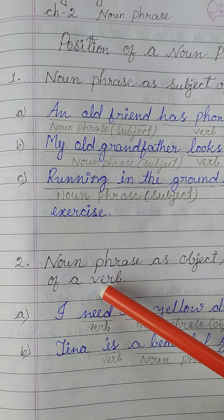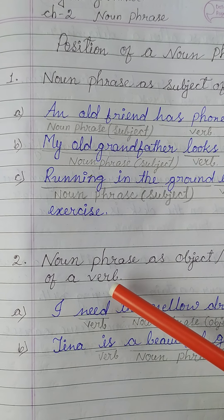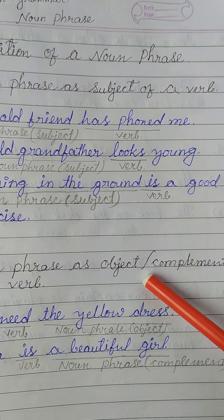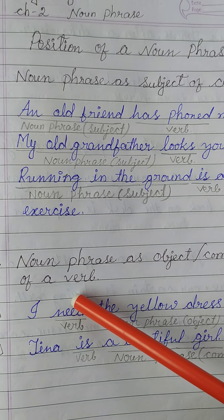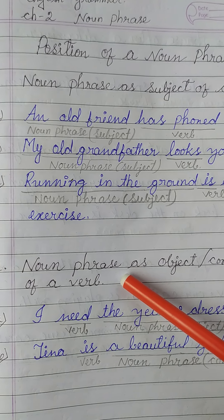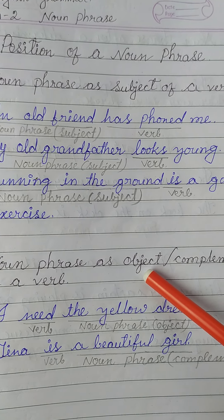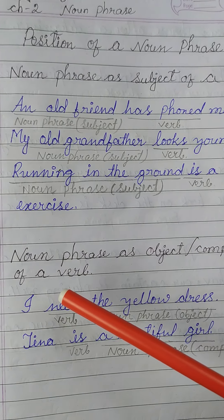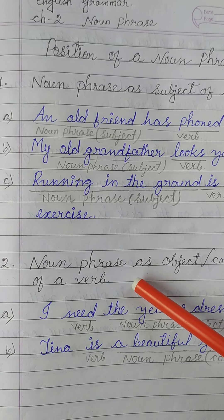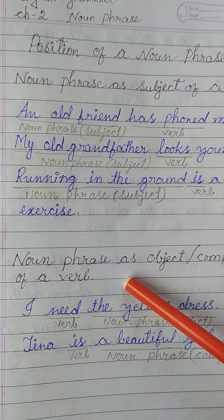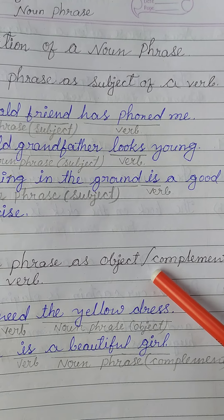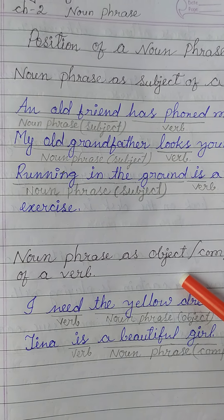Number 2: Noun Phrase as object or complement of a verb. We can use a Noun Phrase as the object of a verb or the complement of a verb.